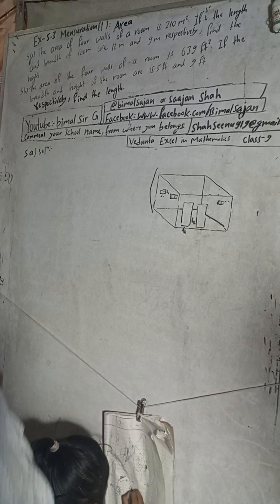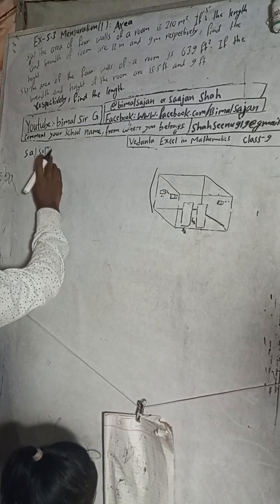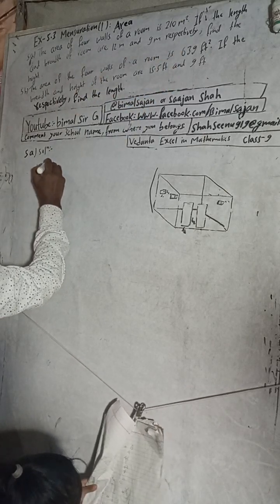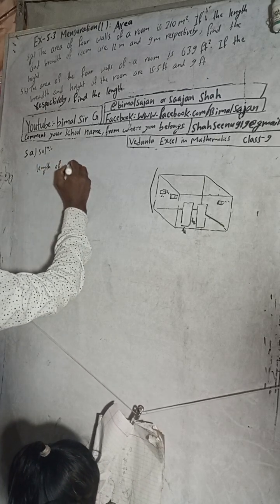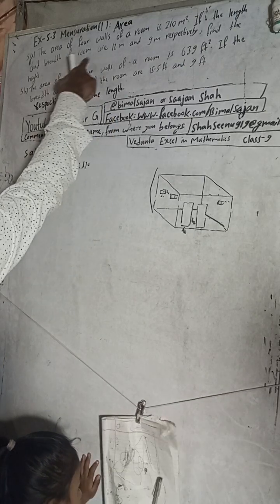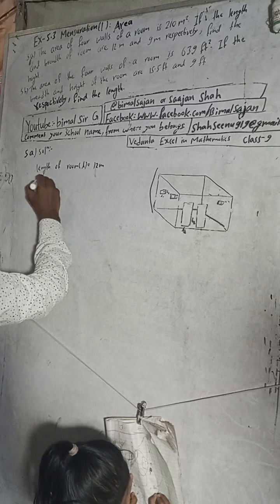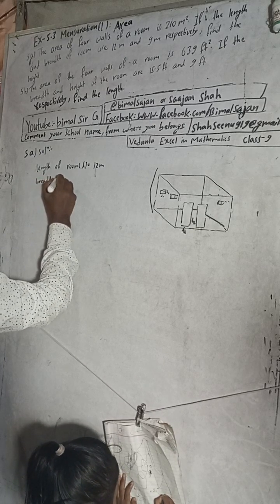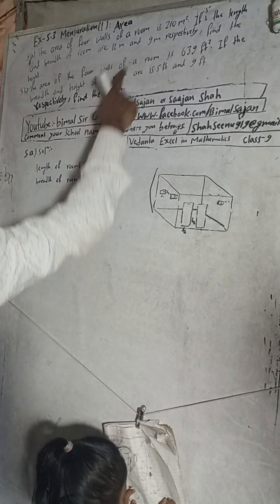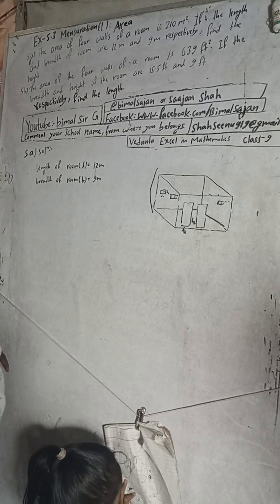The area of four walls of a room is given. Length of room L is equal to 12 meters. Breadth of the room is 9 meters. And we need to find the height.